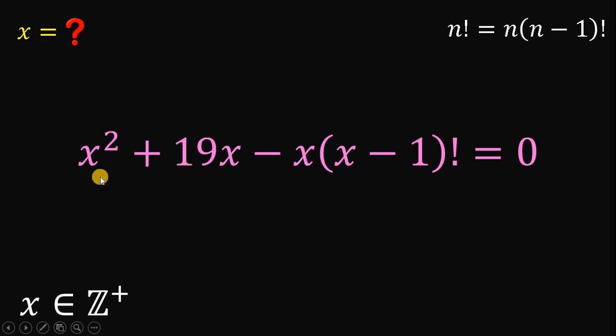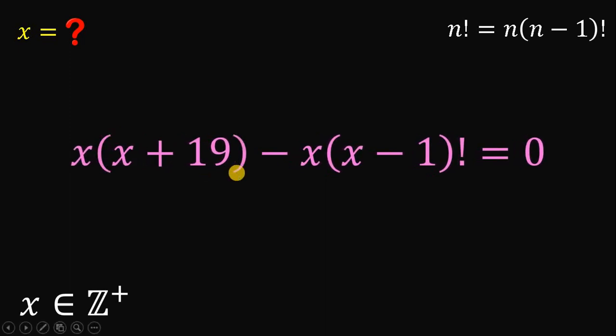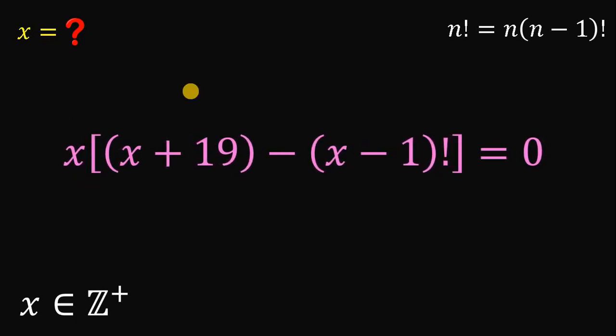Because on the first two terms, we have x squared plus 19x. We can factor out x given these two terms. Now, we have a common term of x on these two terms so we can factor out the variable x. We have x multiplied by x plus 19 minus x minus 1 factorial equals 0.